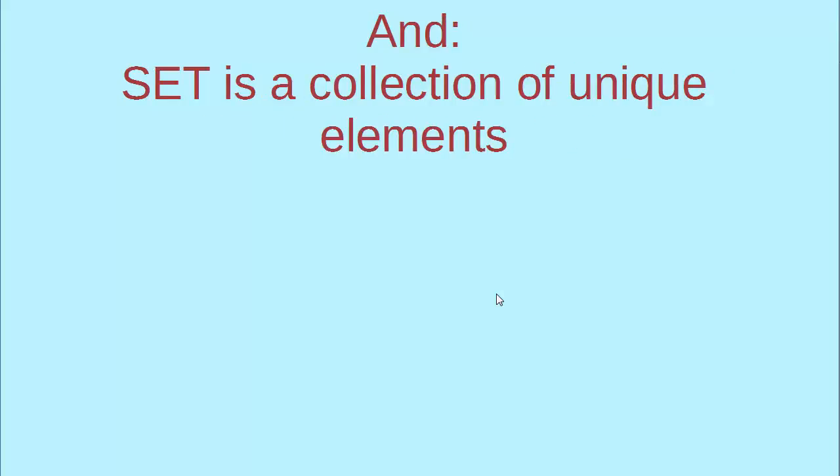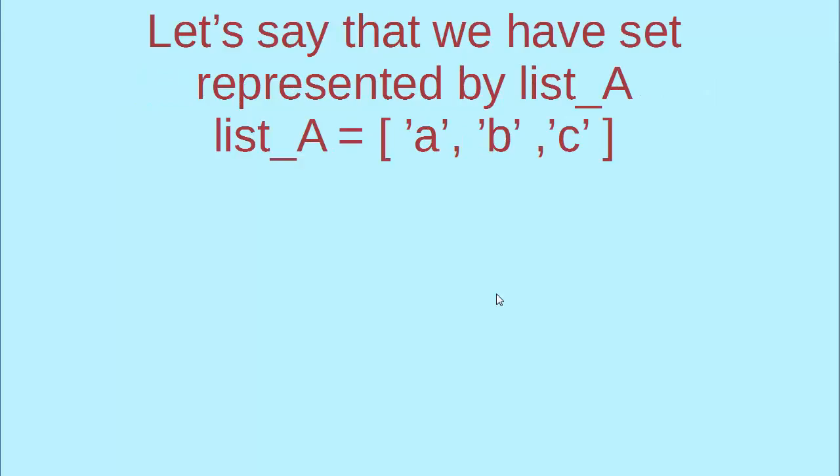What is a set? Set is a collection of unique elements. Let's say that we have set represented by list A and that list A has elements A, B and C. So we have list A which we can represent as our set A.